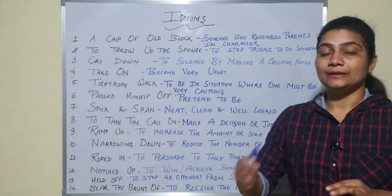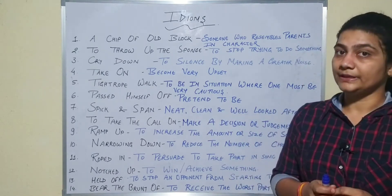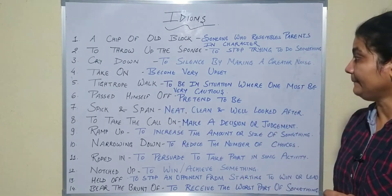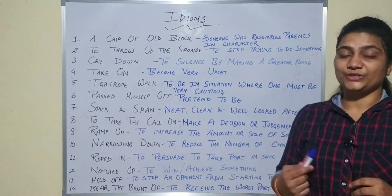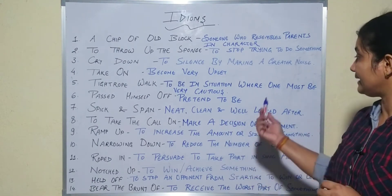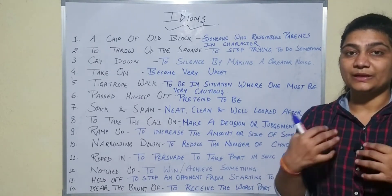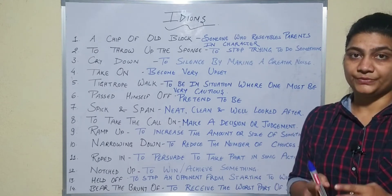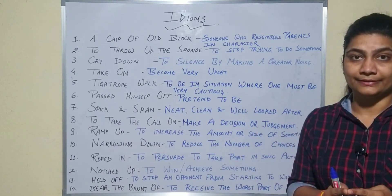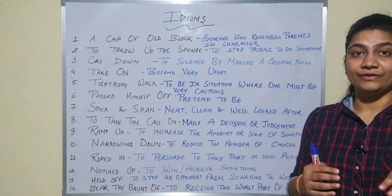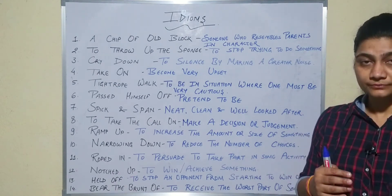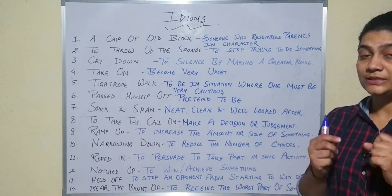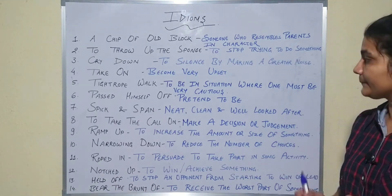'Take on' — matlab bahut zyada upset ho jana — become very upset. Next, 'tightrope walk' — kya hota hai: aisi koi situation jab humein bahut zyada cautious rehna padta hai, us situation mein jis tarah se hum apne aap ko handle kar rahe hain, that handling is tightrope walk. Right now jaise hum corona mein har cheez ko handle kar rahe hain, so what we are doing — we are having a tightrope walk. Woh situation jab humein bahut zyada cautious rehne ki zaroorat hai.